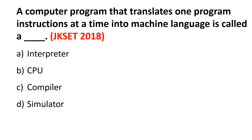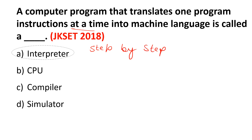Now we have JK Set 2018 questions. First question from 2018: A computer program that translates one program instruction at a time into machine language is called — interpreter, CPU, compiler, or simulator? This is a very important question. A program that translates one instruction at a time is an interpreter, because an interpreter executes instructions step by step, line by line. The right answer is interpreter.